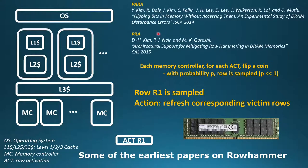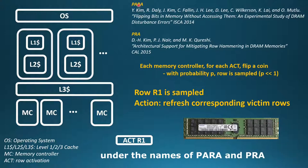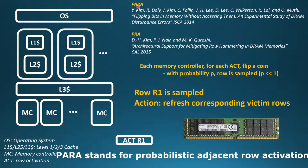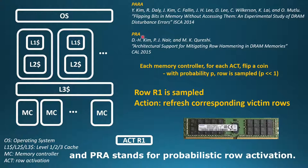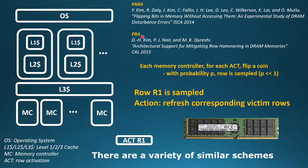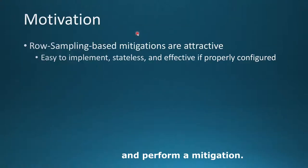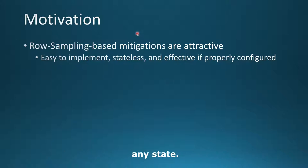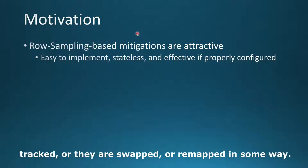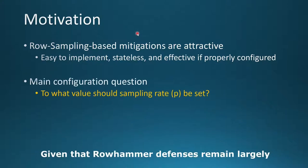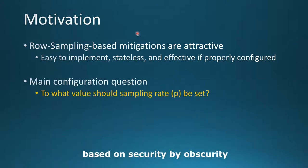Some of the earliest papers on row hammer introduced variants of sampling-based defenses under the names of PARA and PRA. PARA stands for Probabilistic Adjacent Row Activation and PRA stands for Probabilistic Row Activation. There are a variety of similar schemes in the literature — sample a row, declare it as an aggressor, and perform a mitigation. Row sampling's main benefit lies in its simplicity: an implementation doesn't need to maintain any state. This is in stark contrast with other forms of row hammer defenses that need to store, lookup, and maintain large tables of tracked, swapped, or remapped rows. Row sampling is also very effective if properly configured. Given that row hammer defenses remain largely based on security by obscurity, we expect to see a resurgence of row sampling schemes deployed in modern CPUs.